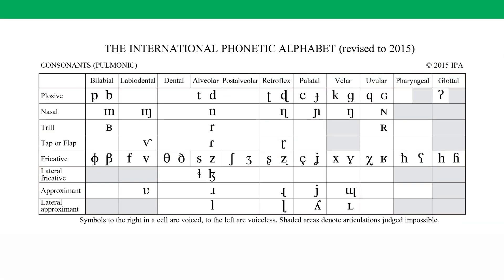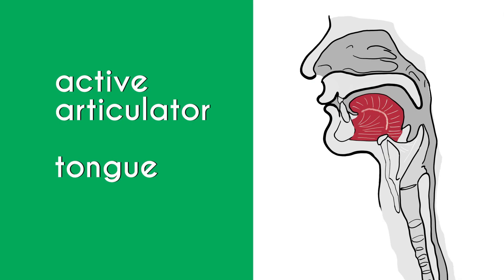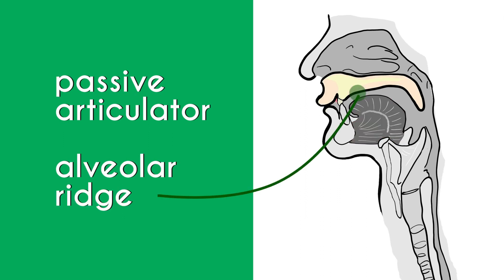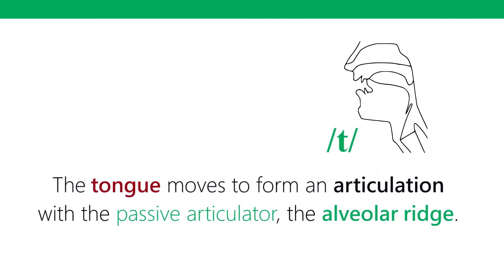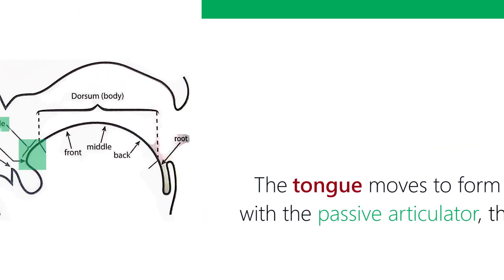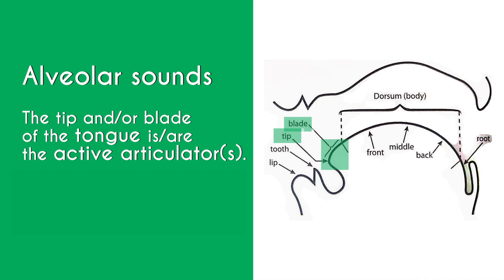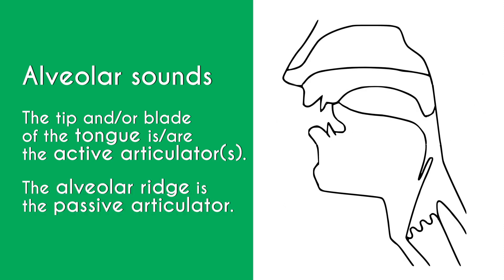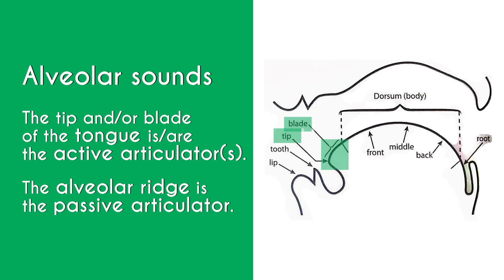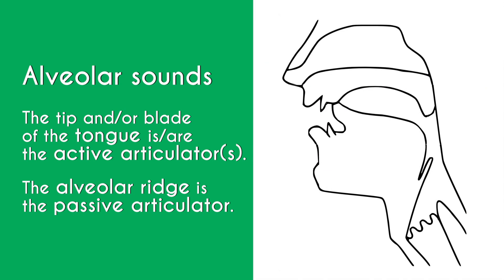If you look at the IPA consonant chart, for alveolar sounds the tongue is the active articulator and the alveolar ridge is the passive articulator. What comes into contact with the alveolar ridge can be the tip only, the blade only, or both, since they're close enough to touch the ridge simultaneously. Alveolar sounds are coronal, and in different phonological environments the same person may use only the tip, only the blade, or both — this is one way different people sound different.